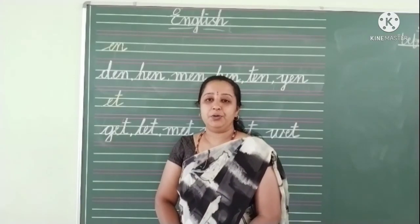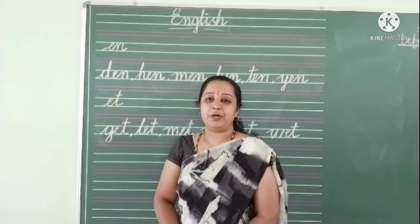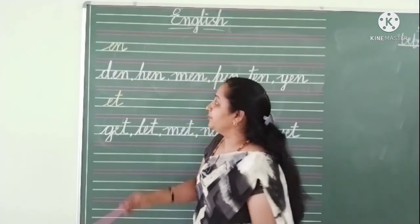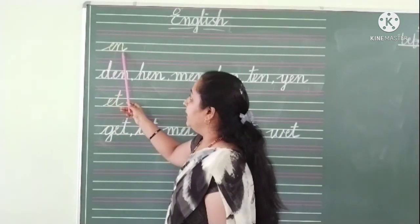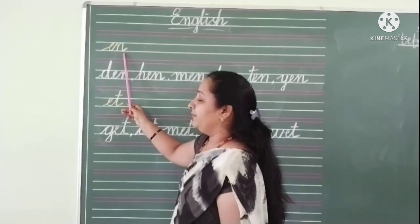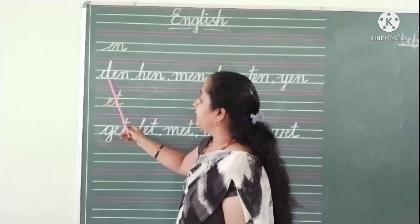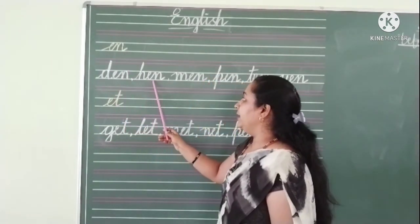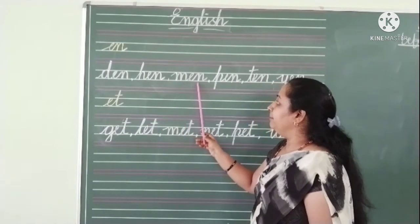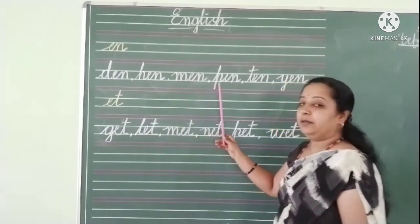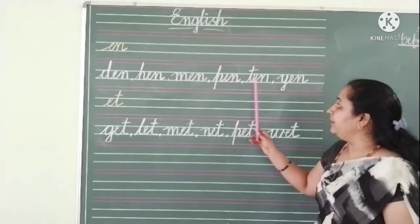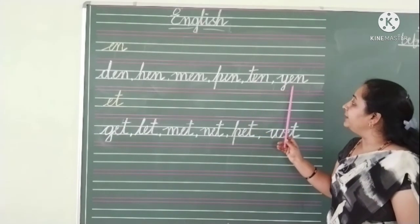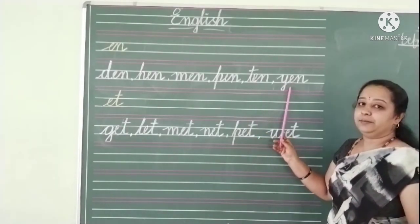Now I will show you how we should write the same words on the board. EN family words: D-N — den. H-N — hen. M-N — men. P-N — pen. T-N — ten. And Y-N — yen.